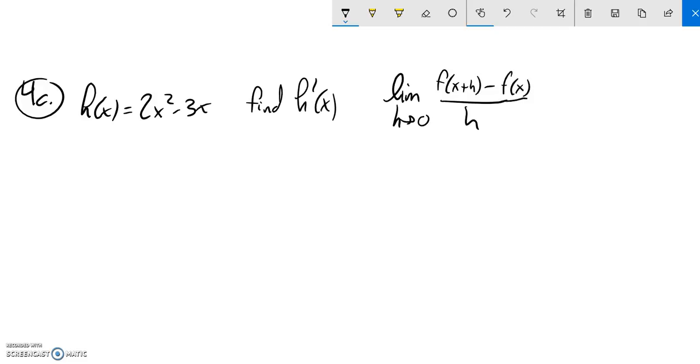And we take the outputs for the points. So let's do this. The limit as h goes to 0 of x plus h plugged into that function. So 2 times x plus h squared minus 3 times x plus h. And then we're going to subtract the function at x, which is just 2x squared minus 3x. And it's divided by the distance between them.